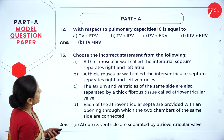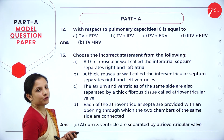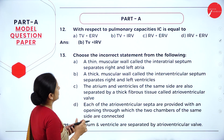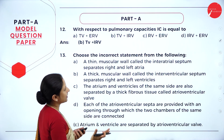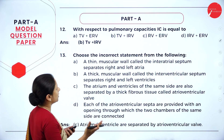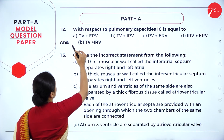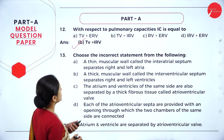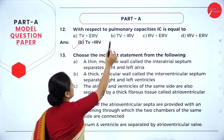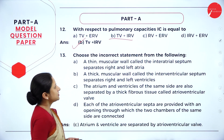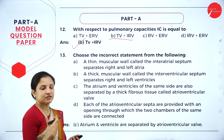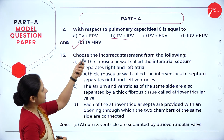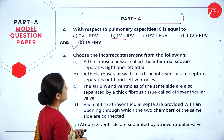Question 12: with respect to pulmonary capacities, IC (inspiratory capacity) equals what? The answer is tidal volume plus inspiratory reserve volume (IRV). Option B is the right answer.